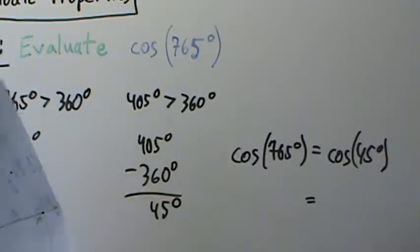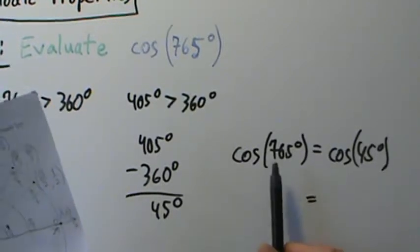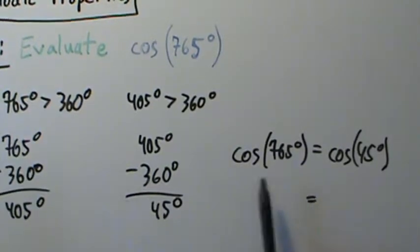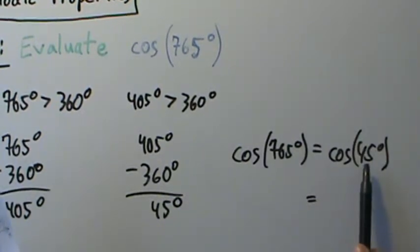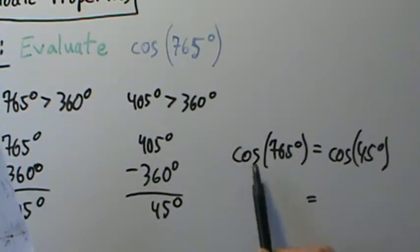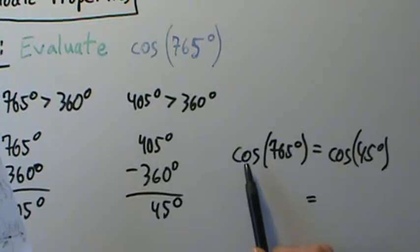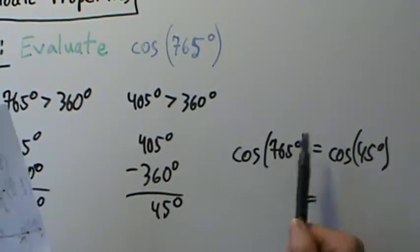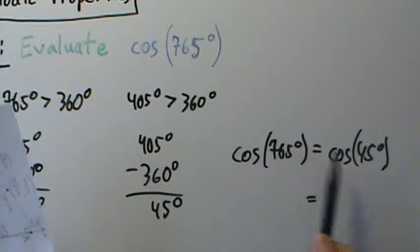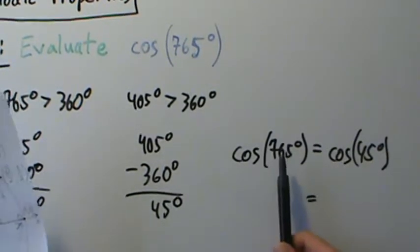The periodic properties tell us that because 765 degrees minus 360 degrees minus another 360 degrees gives us 45 degrees, then because cosine has period 360 degrees, then these guys are going to have the same cosine. These two angles have the same cosine because they differ by a multiple of 360 degrees.